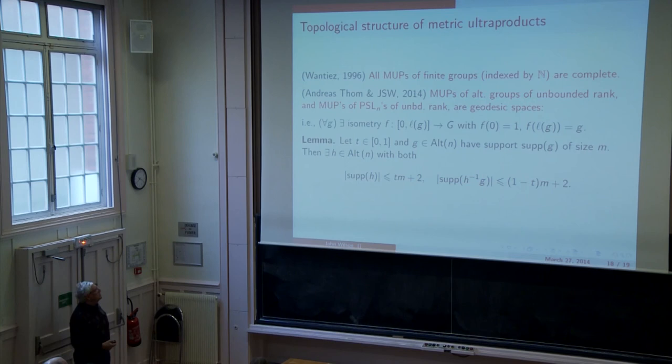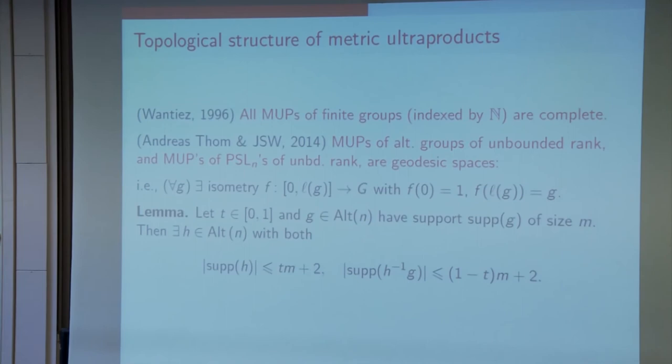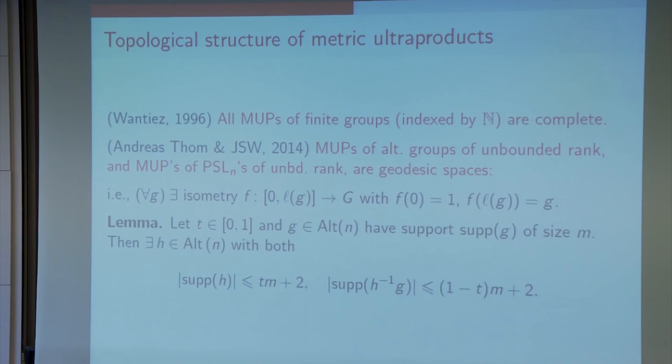How do you prove that? Well, again, my students would probably understand the proof of this. So, you're interested in trying to find a point at distance, an element of the ultraproduct, a distance t along the geodesic. So, t is between 0 and 1 in the reals. And you take g in the alternating group and suppose that it has support of size m, then you can find an h in the alternating group such that both of these two statements hold. The support of h is less than or equal to tm plus 2, and the support of h to the minus 1 g is less than or equal to (1 minus t)m plus 2. It's fairly clear you're going to have to add something here, because, of course, the support of a product, the size of it, is at most the size of the union of two sets. The fact that it is 2 seems to be about best possible.